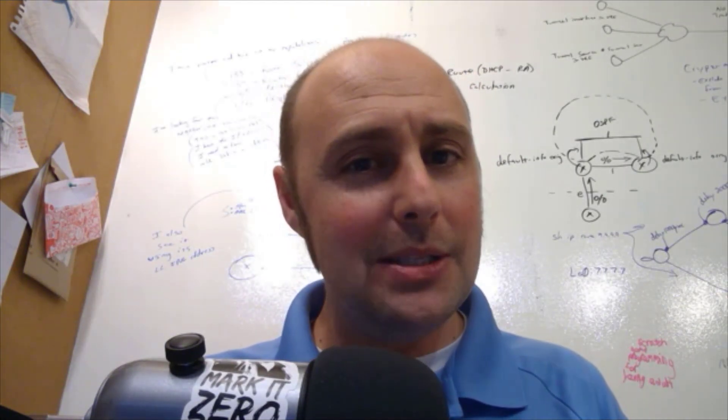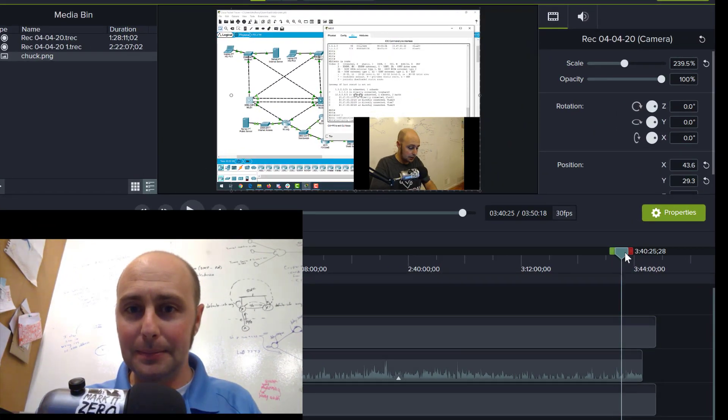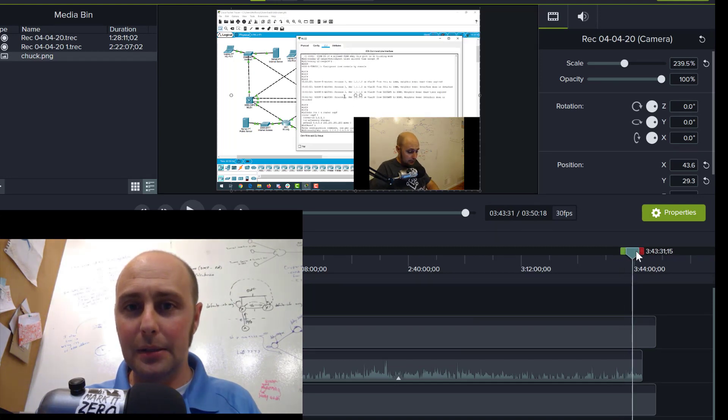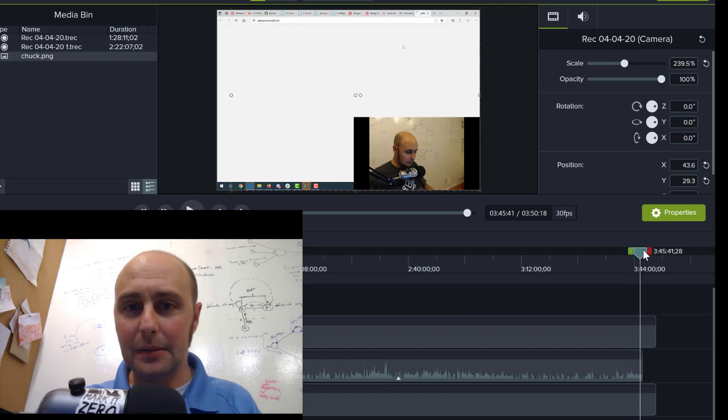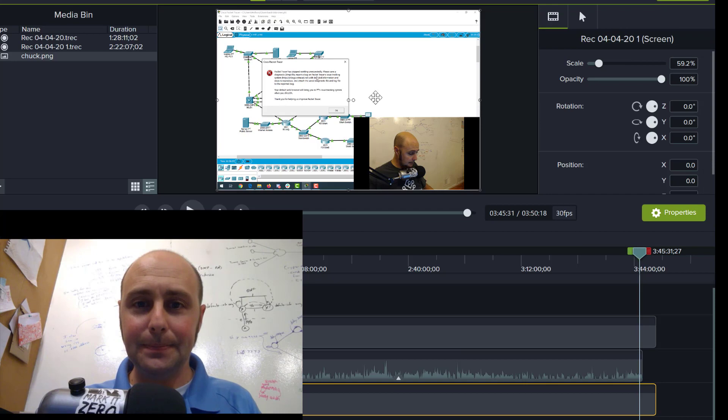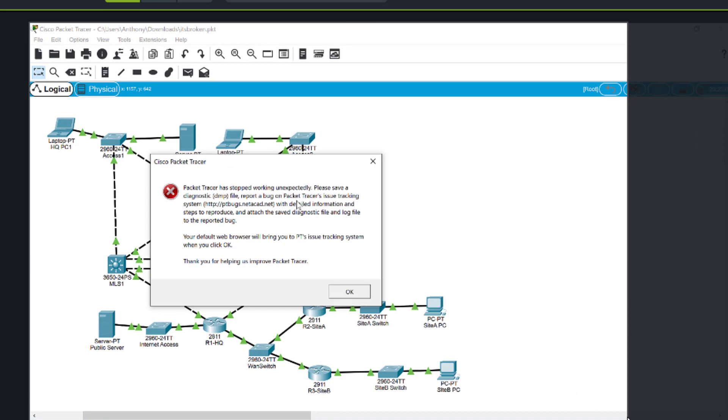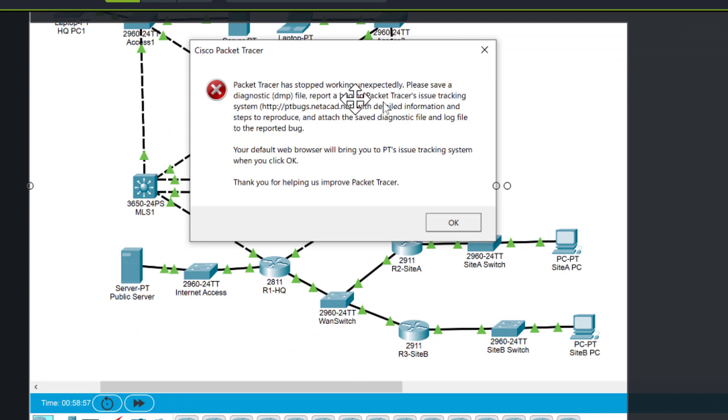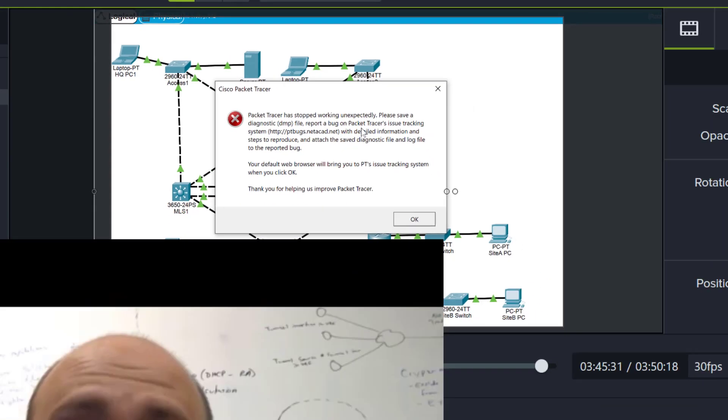That was late Saturday night. I spent over two and a half hours recording this lab. And right when I was, I would say, at the end, trying to get the last bit of connectivity, if I scroll ahead in my lab here, I got a crash. Packet tracer has stopped working unexpectedly. Please save a diagnostics dump file. I couldn't believe it.